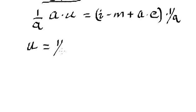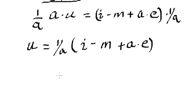So this is 1 over a, and in parentheses, I have an i minus an m plus a times e. And we're going to leave it just like that.